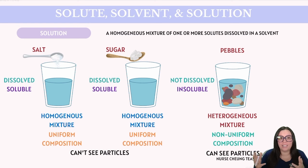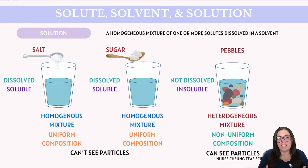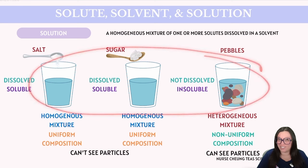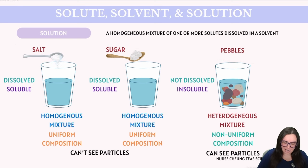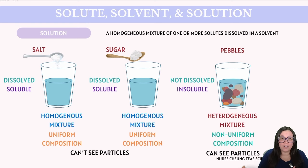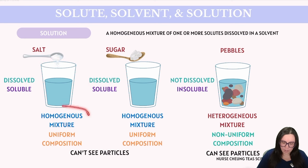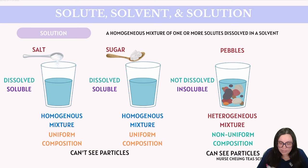Let's talk about another important concept: solute, solvent, and solutions. Let's explore what constitutes a solution with a simple experiment involving three different glasses of water. In the first glass we add salt, in the second we add sugar, and in the third we add pebbles. The salt completely dissolves, forming a homogeneous mixture — the mixture has a uniform composition and we cannot differentiate between the salt particles and the water with the naked eye. Just like the salt, sugar also dissolves completely, resulting in another homogeneous mixture.